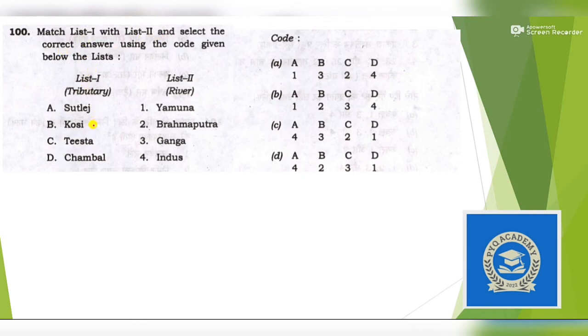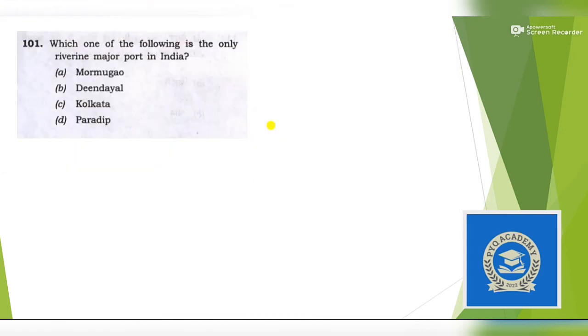This is a very simple question where we have to match the tributaries. Sutlej is tributary of Indus, Kosi tributary of Ganga, Teesta of Brahmaputra, Chambal of Yamuna. Let's match - for A, four, definitely between these two options. For B, three - yes, this is the correct option.